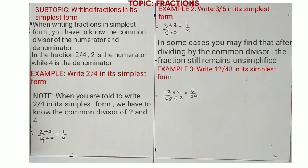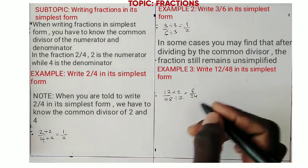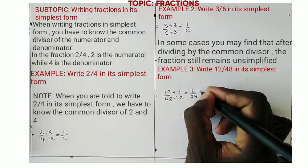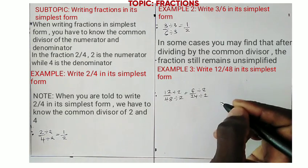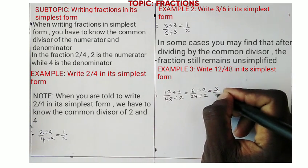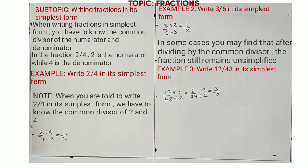Therefore, 6/24 is not simplified because there is still a common number that can divide 6 and 24. In such fractions, you will continue dividing until it becomes simplified. So, 6/24, we continue dividing by 2. 6 divided by 2 equals 3 and 24 divided by 2 equals 12. After getting 3/12, you will also see that 3/12 has a common divisor. The common divisor of 3 and 12 is 3.